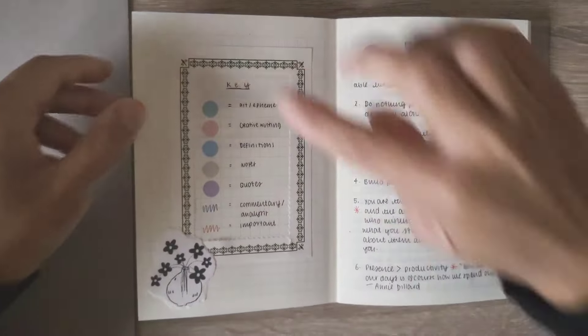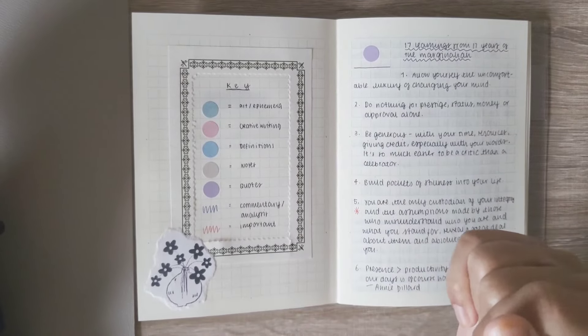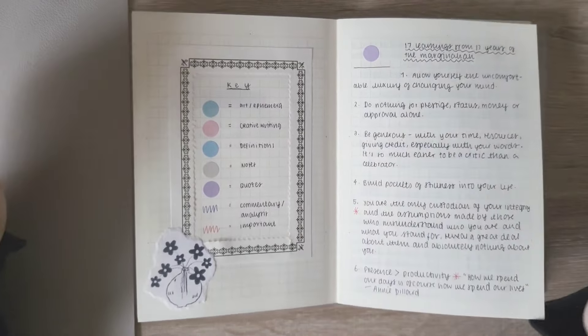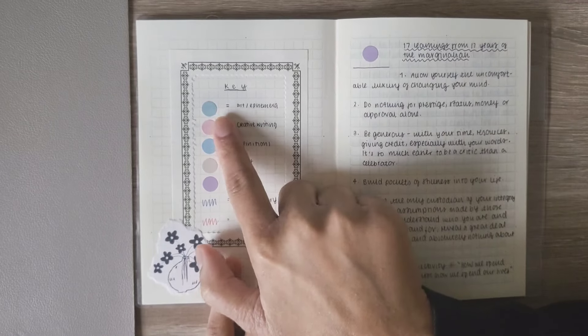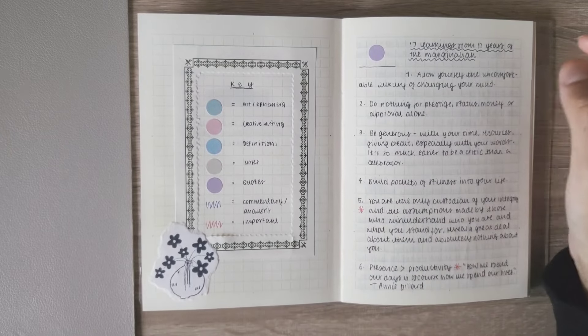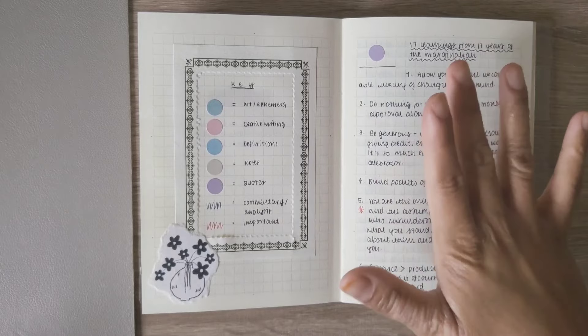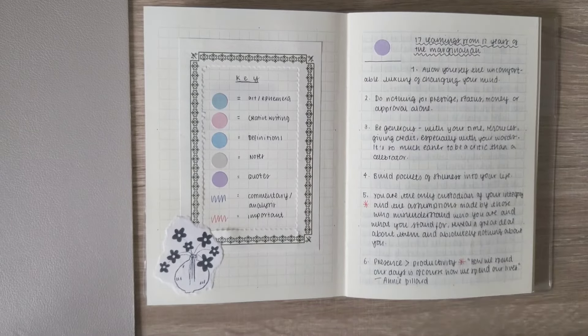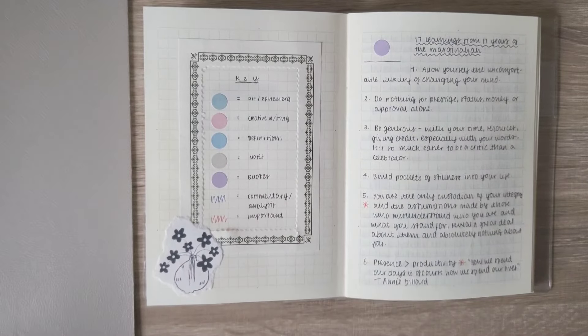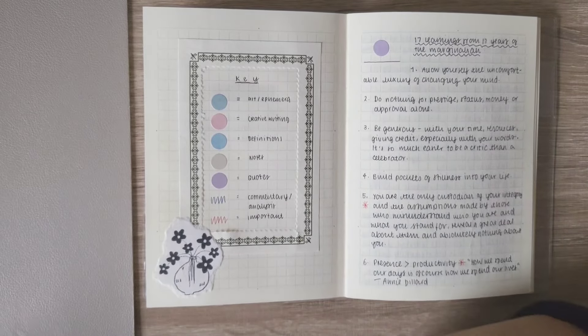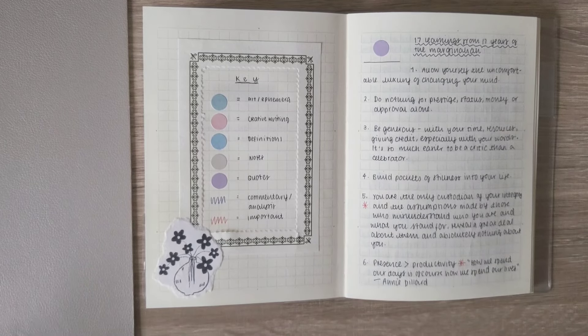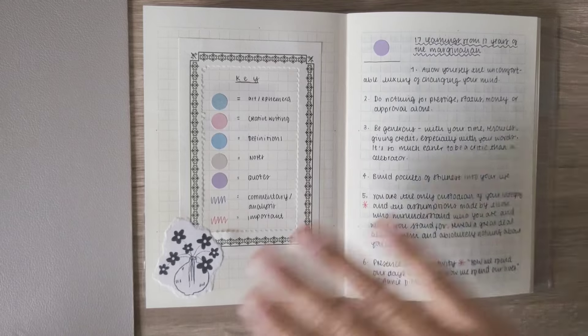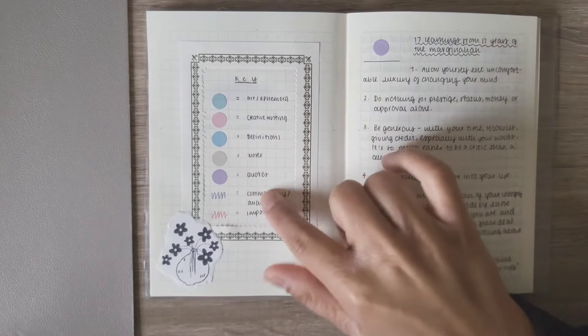And then you have the key. This frame thing came with freebies that Barbara from Miso Paper gives, so I just used it here. So my key is: turquoise is art slash ephemera, pink is creative writing because I've been really loving writing my poetry in my commonplace book, blue is definitions so if I don't know a word I'll write the definition in my book, green is notes. Notes is kind of vague but not vague enough where it's confusing to me. I very much in my head know what comes under notes. I'll explain it when we come across an entry. And purple is quotes.